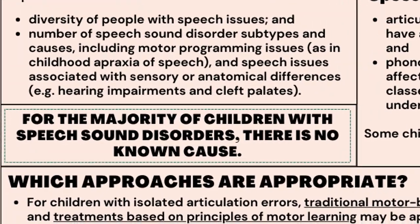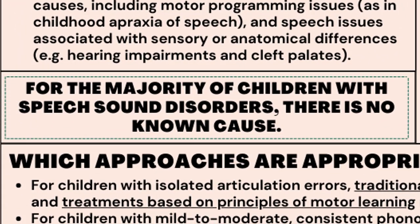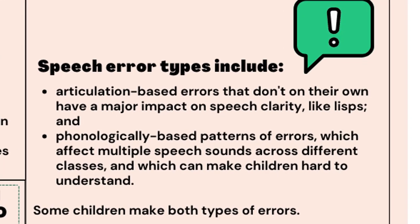For the majority of children with speech sound disorders, there is no known cause. Speech error types include articulation-based errors that don't on their own have a major impact on speech clarity, like lisps, and phonologically based patterns of errors which affect multiple speech sounds across different classes and which can make children hard to understand. Some children make both types of errors.